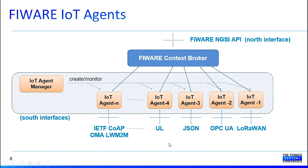They are covering protocols and technologies from Lightweight Machine to Machine, Ultra Light, JSON, OPC UA, and LoRaWAN, which is the one we will show you later on. You can build your own IoT agent very easily, since a library is provided that exposes several APIs you can use to build a new IoT agent for converting a new protocol or data format into NGSI. The IoT agents are in charge of collecting this data, transforming the data format into NGSI, and pushing this data into the Context Broker to be used by other components or services.